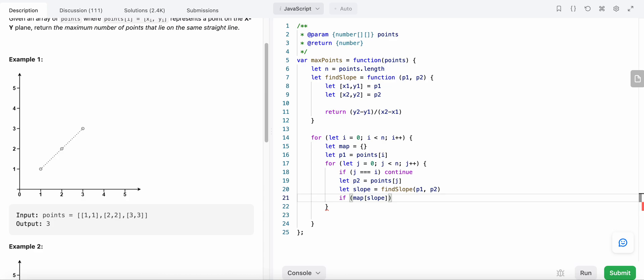If we do not already have the value for this slope, then we initialize it to zero. Else, we just increment the value. Now, once we have done it